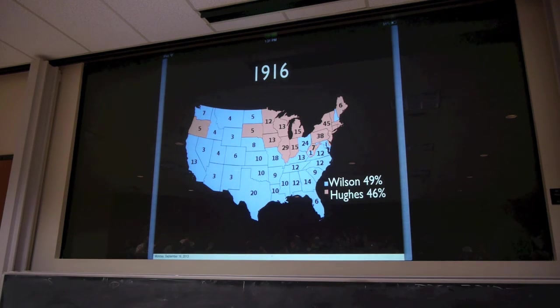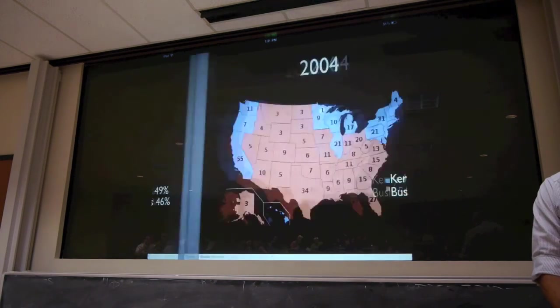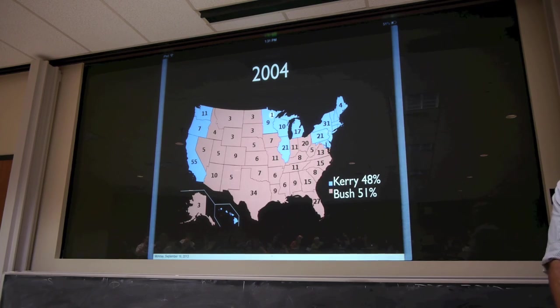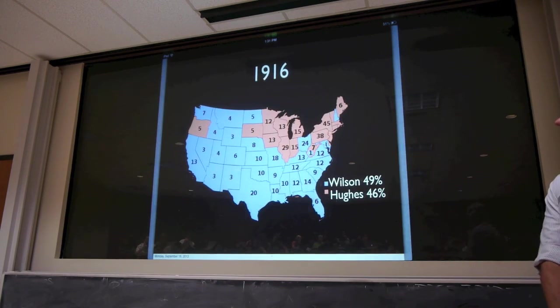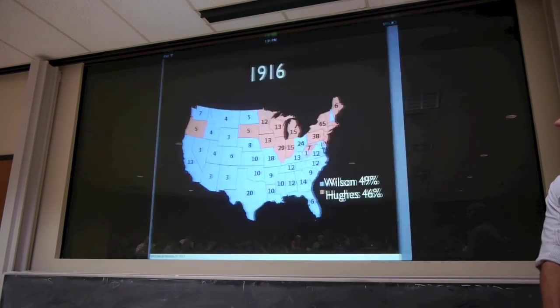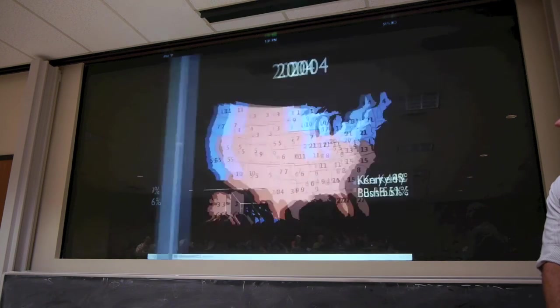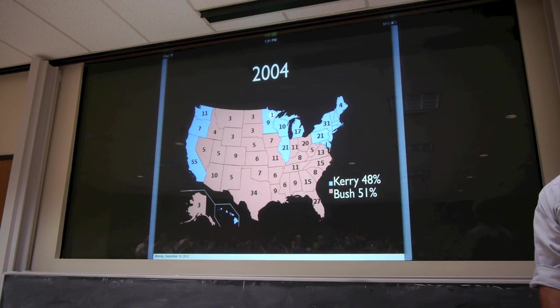Take a look at 1960. We see a big, fat blue L, but then 2004 — just switch back and forth for a moment. They're almost exact inverses of each other.